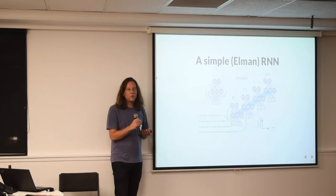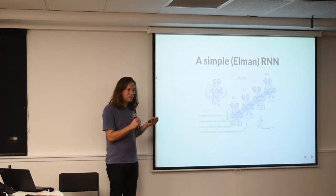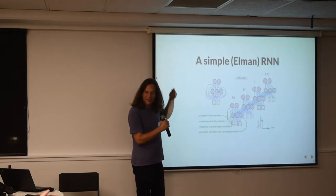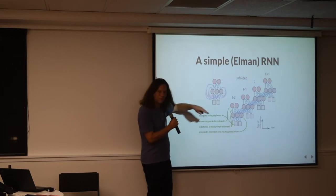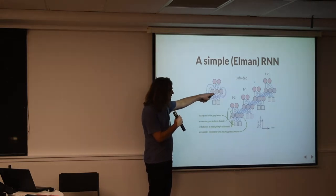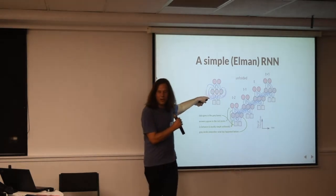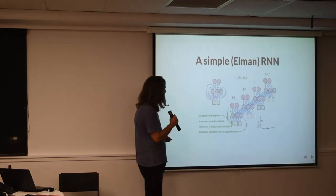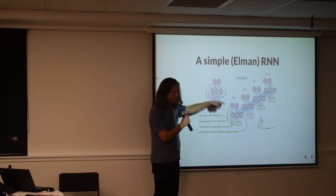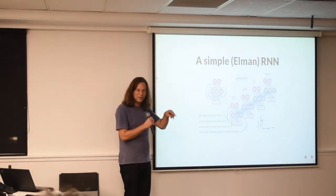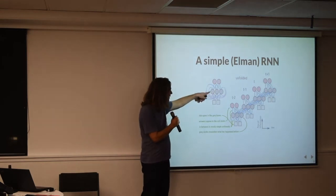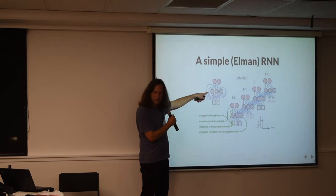There are so many blog posts explaining how neural networks work at a basic level, so I'll just explain what the unfolded diagram means. A normal neural network — a multi-layer perceptron — has input layers, hidden layers, and output layers. You multiply numbers together, add them, and apply a nonlinearity. With a recurrent neural network, as well as going forward through the layers, outputs also feed back in at the next time step.